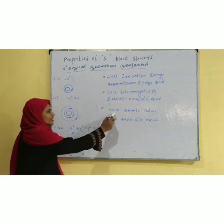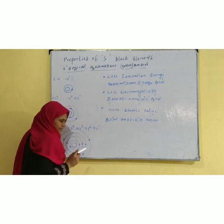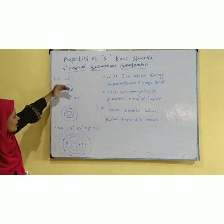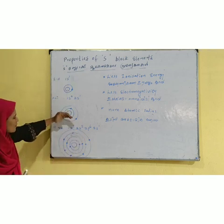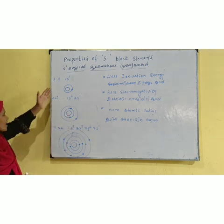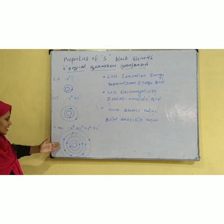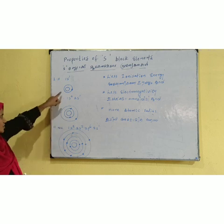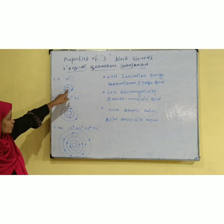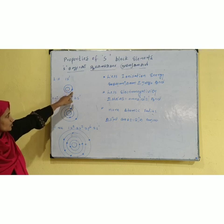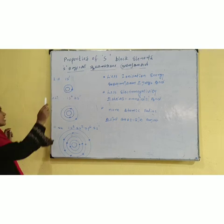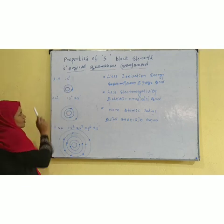S-Block elements have a larger atomic radius. The nucleus has a large electron cloud because the atomic number starts at 1. For example, hydrogen has the electron configuration 1s1 — just one electron.